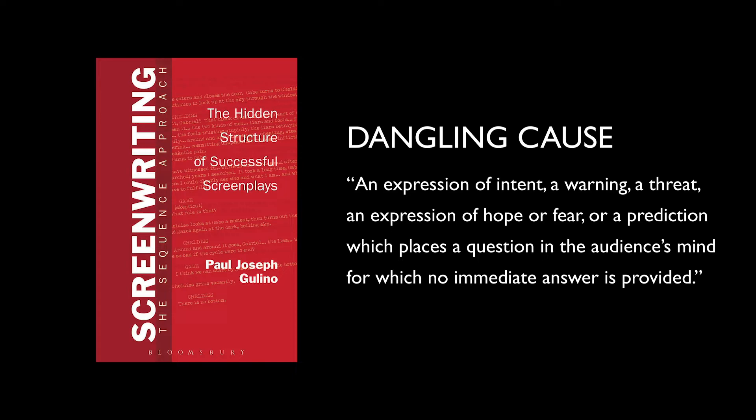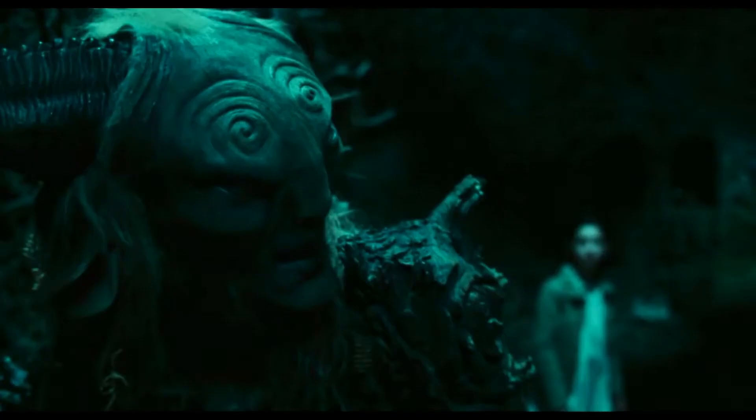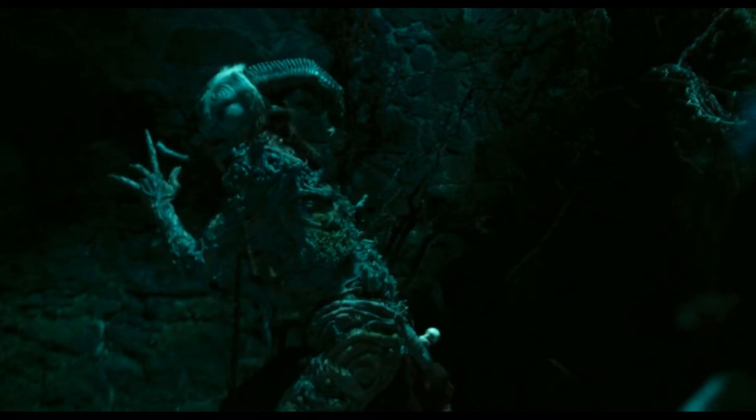The second example of driving the audience's attention towards the future is known as the dangling cause. Paul Joseph Golino explains the dangling cause as an expression of intent, a warning, a threat, an expression of hope or fear, or a prediction which places a question in the audience's mind for which no immediate answer is provided. Essentially, a character expresses a desire for something to happen, causing the audience to want to know what the actual result will be.